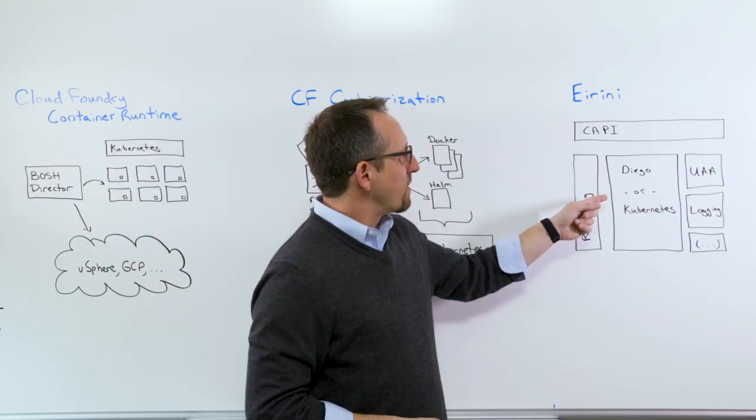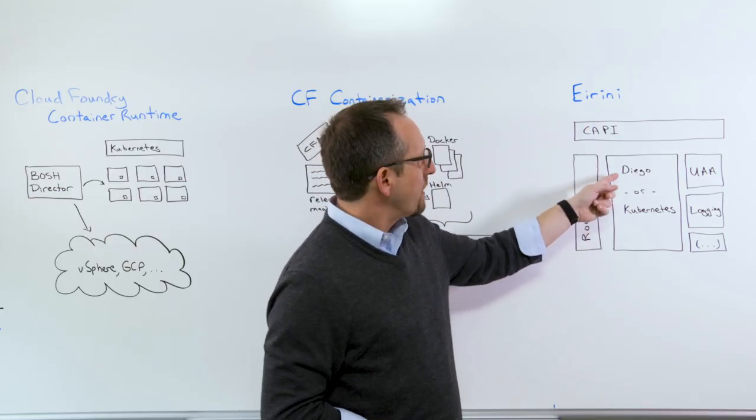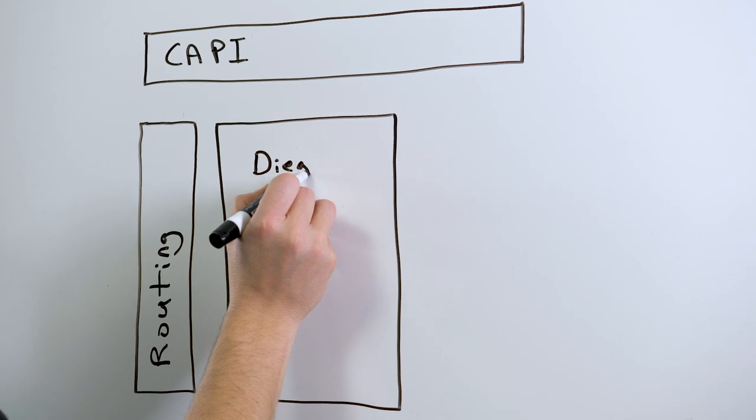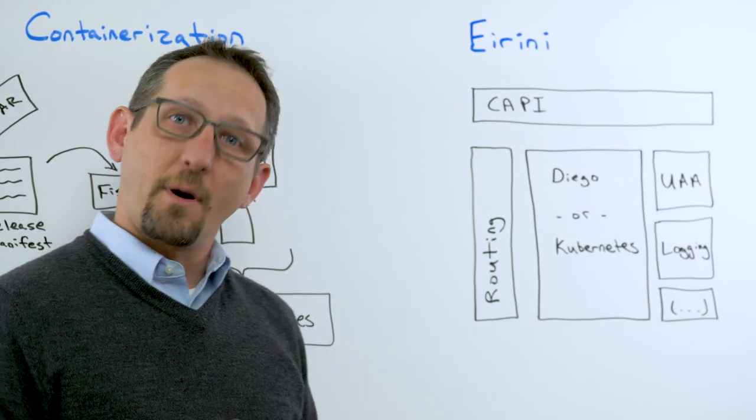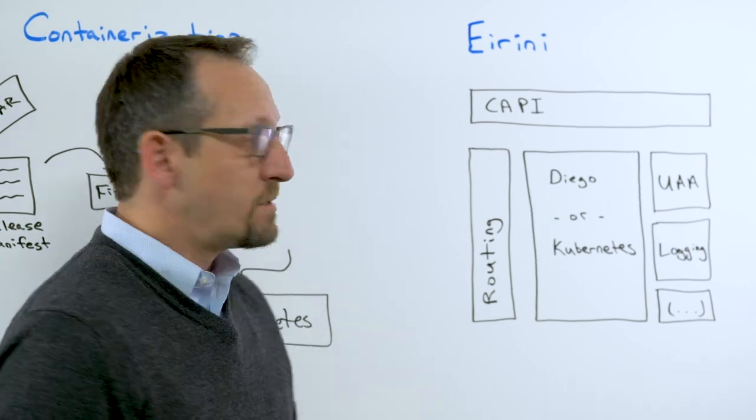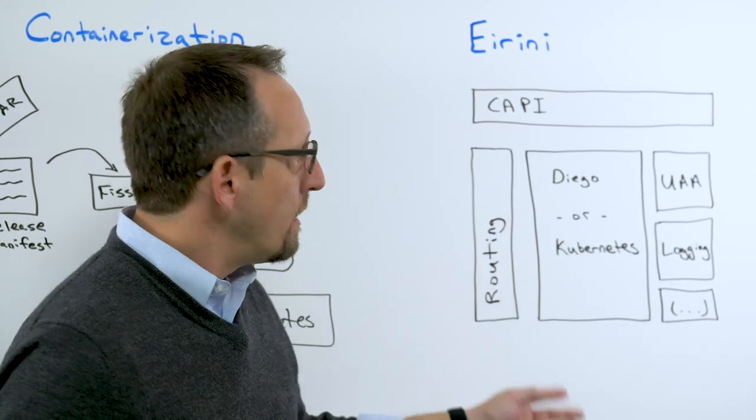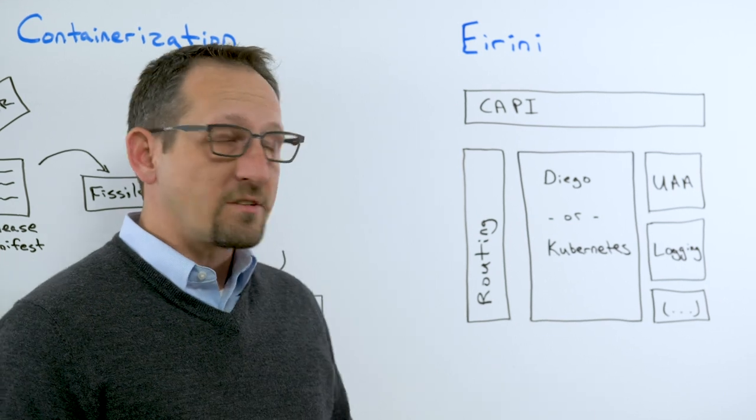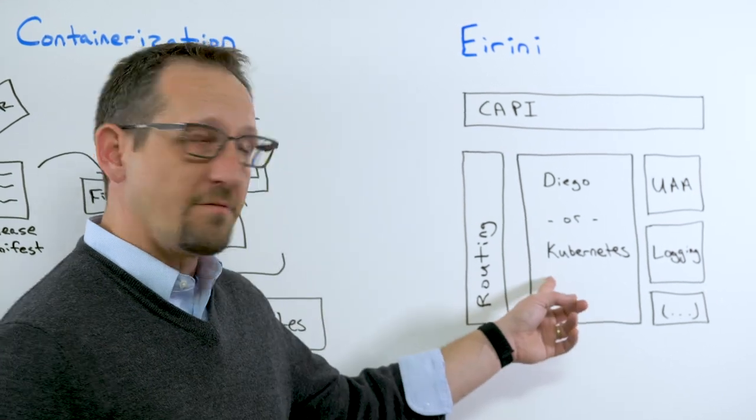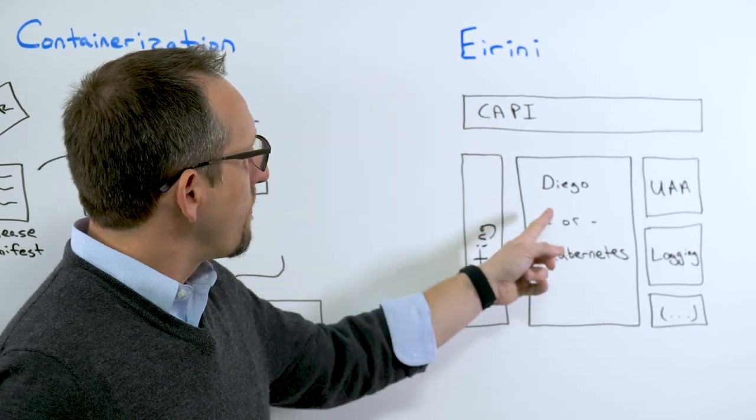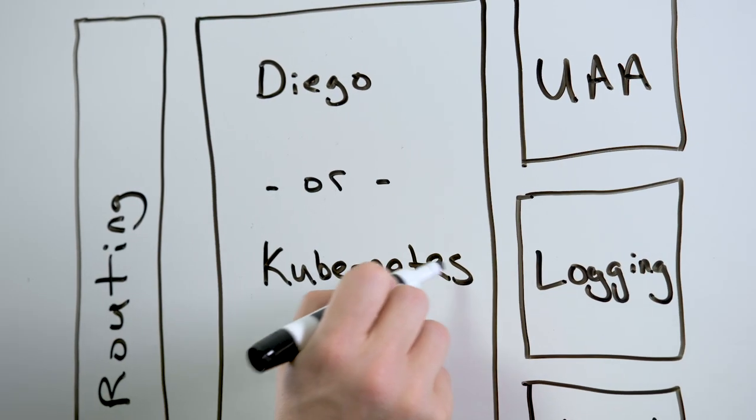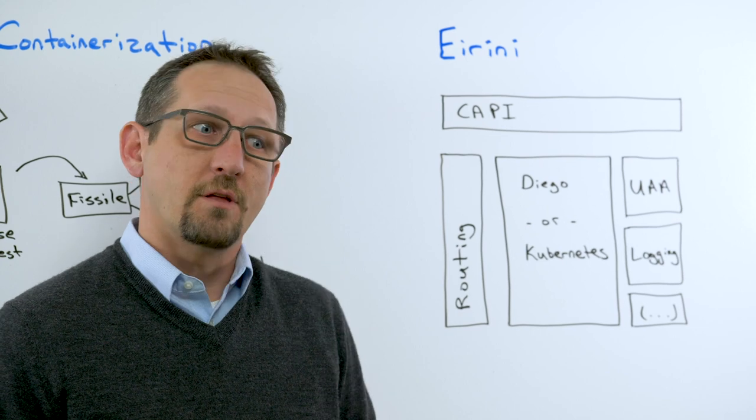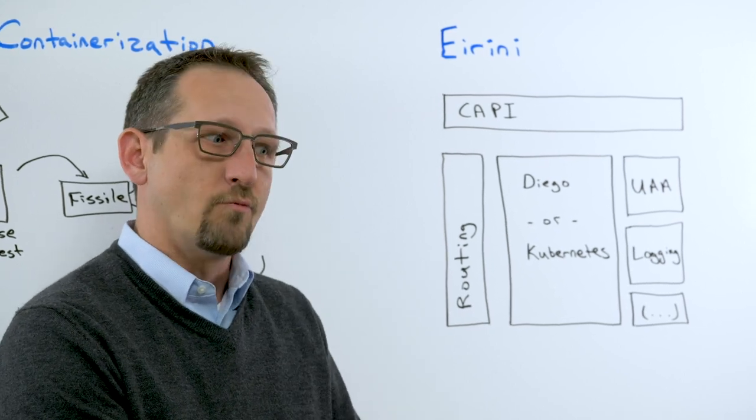Now, what the Eirini project is focused on doing is providing an option for the Diego container scheduler. The Diego container scheduler is one that was built by our community, purpose-built to support the app runtime. But Kubernetes has reached the point of maturity where there are some use cases that it can solve. Eirini is all about giving us choice between Diego and Kubernetes as the underlying infrastructure that the app containers are run on.